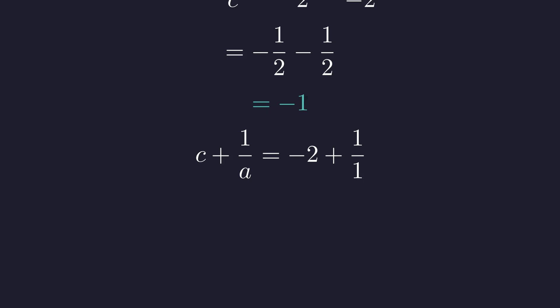Finally, for C plus 1 over A, we substitute to get negative 2 plus 1 over 1. This is clearly negative 1. All three parts are equal, so this case is valid.